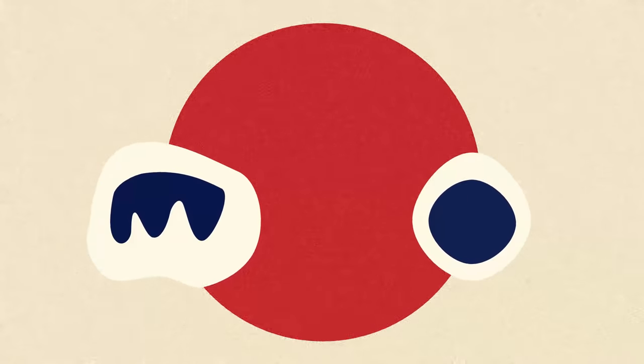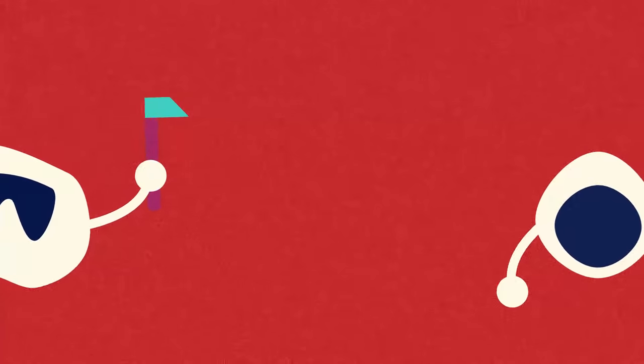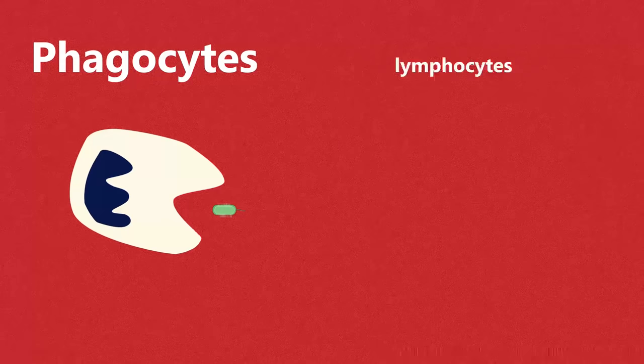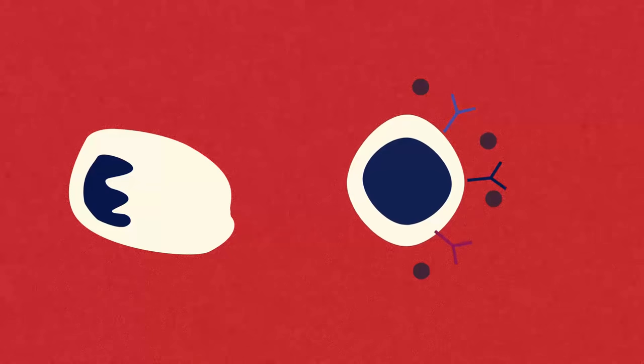They may only be one percent of our blood but our white blood cells can really pack a punch. You just need to remember that phagocytes engulf pathogens and lymphocytes produce antibodies and anti-toxins.